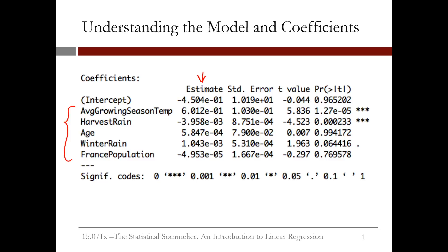The remaining columns help us determine if a variable should be included in the model or if its coefficient is significantly different from 0. A coefficient of 0 means that the value of the independent variable does not change our prediction for the dependent variable. If a coefficient is not significantly different from 0, then we should probably remove the variable from our model, since it's not helping to predict the dependent variable.